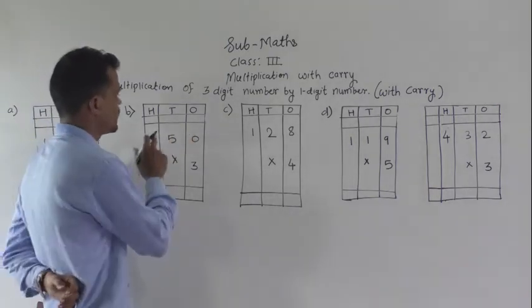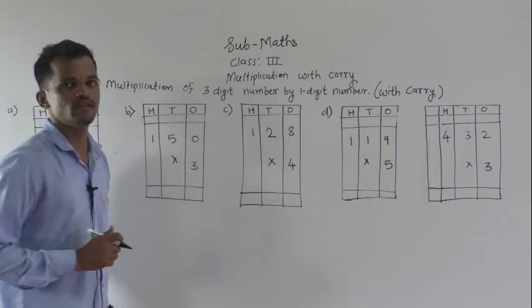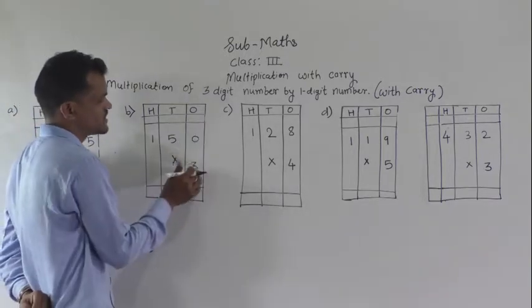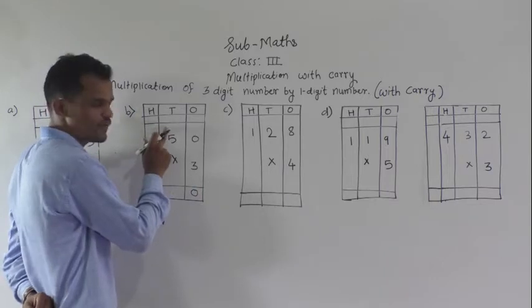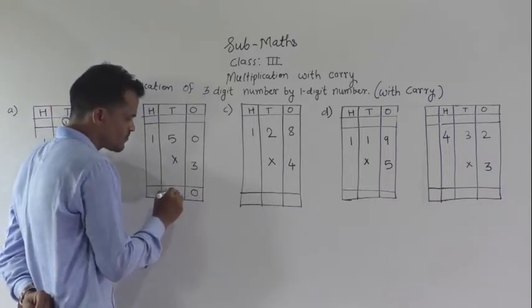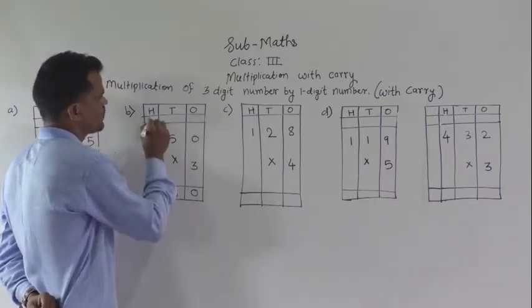Next example: 150 multiply by 3. Start from the ones place. 3 into 0 is 0. 3 times 5 is 15, means write 5 here and 1 carry.